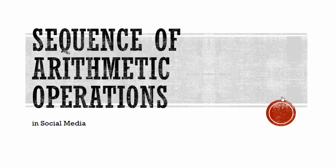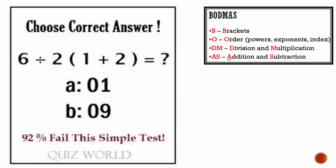Arithmetic operations in social media. I'll go through 10 questions and give you the answer and see how easy it is once you apply BODMAS. First one. Choose the correct answer: 6 divided by 2 multiplied by 1 plus 2 is equal to — they give you either 1 or 9. So 92% fail this simple test. Let's begin.